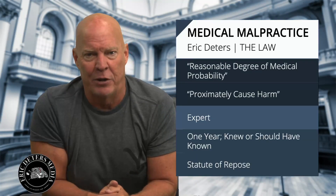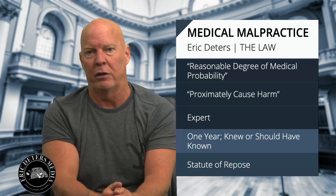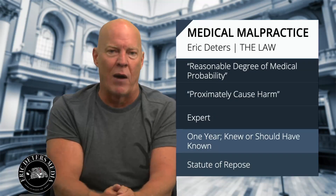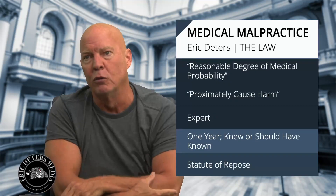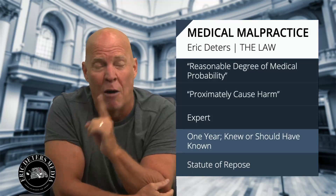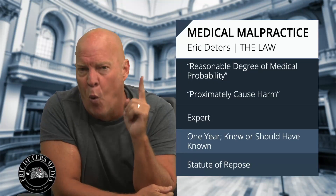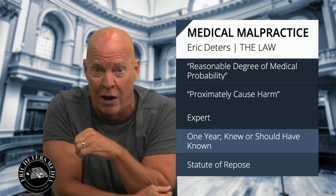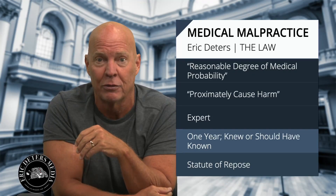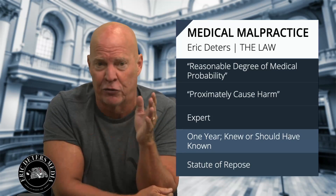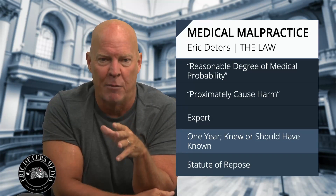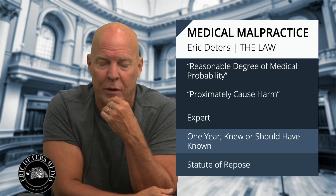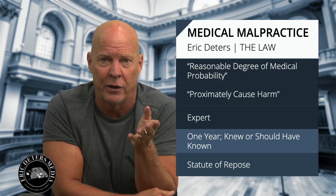How much time do you have? This drives me crazy — people don't act quickly, they wait around. You have one year from when you knew or should have known there was malpractice. I'm going to tell a famous case from the Durrani litigation — of the 500-plus clients, this is a famous one.